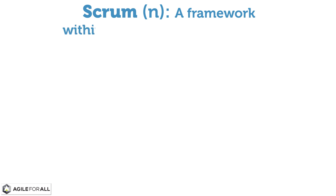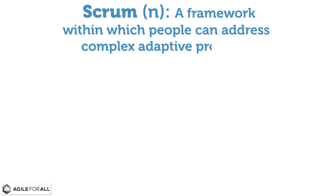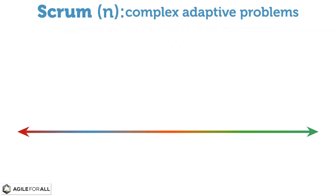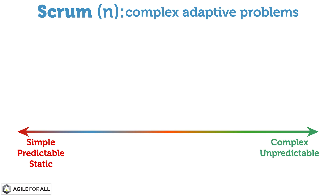The second part of the definition describes something called a complex adaptive problem. To understand that, let's look at a spectrum. On one end of the spectrum, we will place problems that are simple, predictable, and static, or unchanging. On the other end, we will place problems that are complex, unpredictable, and adaptive, or always changing.